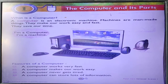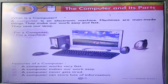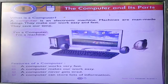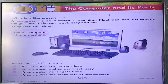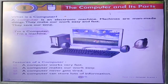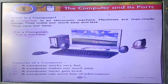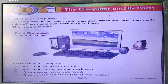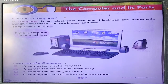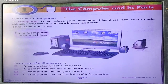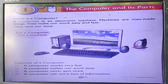What is a computer? Computer kya hai? A computer is an electronic machine — yaani ki electric se chalne wala machine. Machines are man-made things; ye machine admiyok ke dwara banaya gaya hai. They make our work easy and fast — yeh humara kaam bhoat asan aur bhoat fast kerte hain.